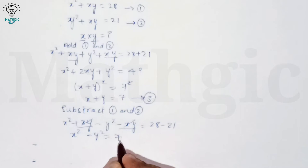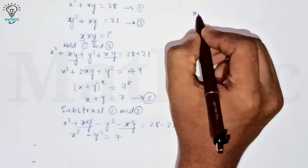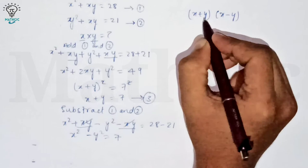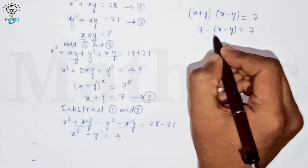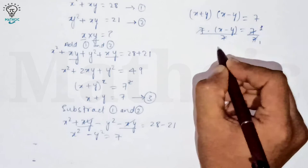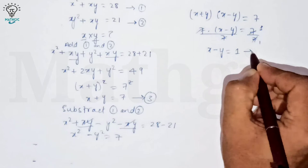Now x squared minus y squared is an identity equal to (x plus y)(x minus y). So (x plus y)(x minus y) equals 7. We already know x plus y equals 7, so substituting: 7 times (x minus y) equals 7, which gives x minus y equals 1. Call this equation number four.